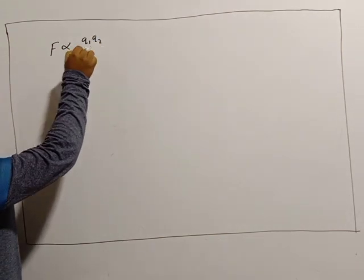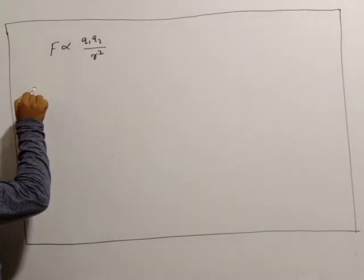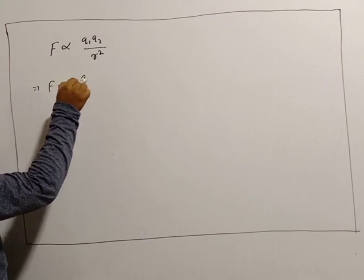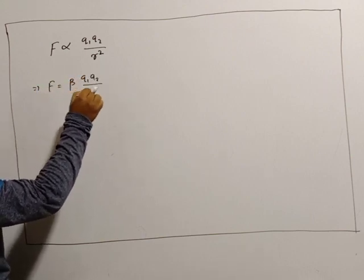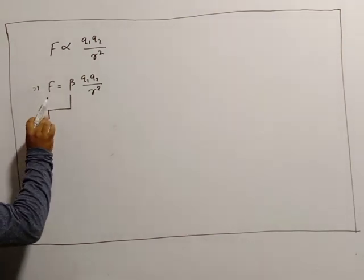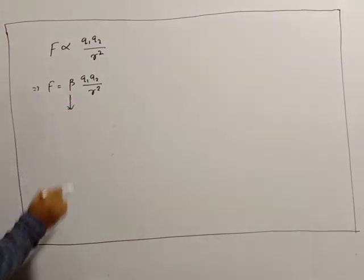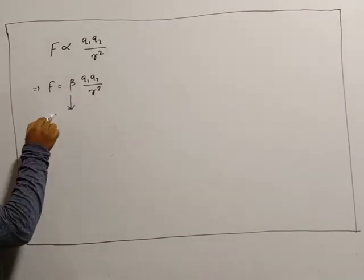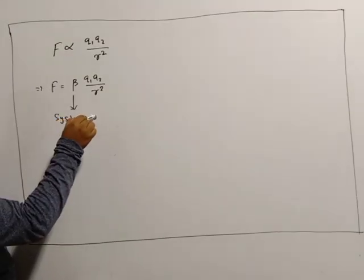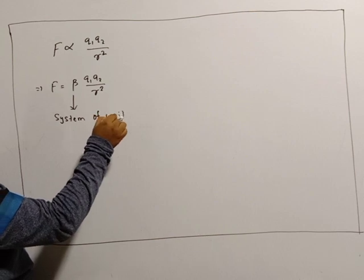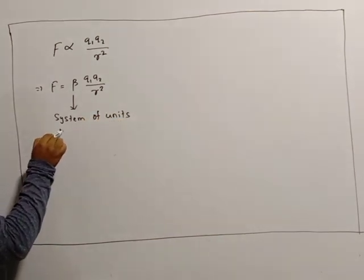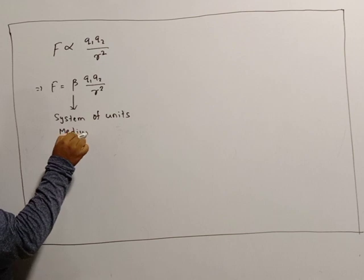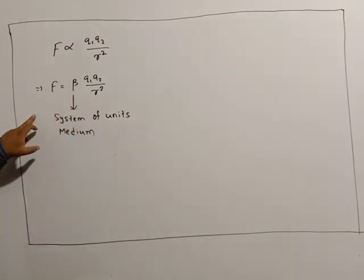In the last class, we studied Coulomb's law. The law states F is proportional to Q1·Q2 divided by R squared. So F equals beta·Q1·Q2 divided by R squared. Here beta is the constant of proportionality. It depends upon two things: first, the system of units; and second, the medium between the charges. So beta depends upon the system of units as well as the medium between the charges.